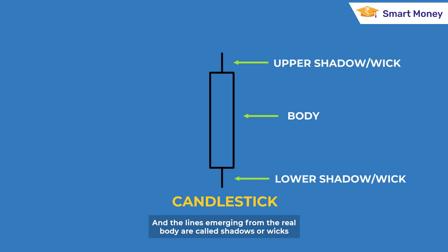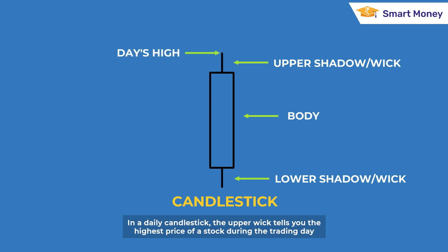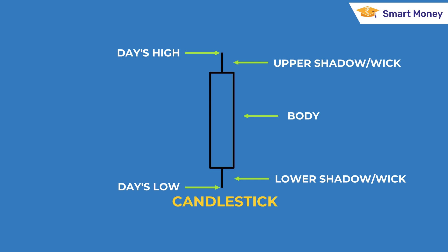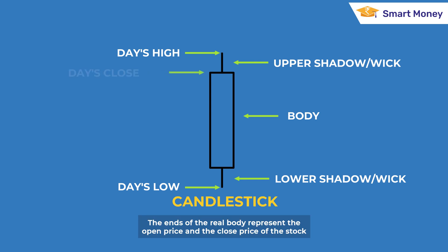In a daily candlestick, the upper wick tells you the highest price of a stock during the trading day, while the lower wick tells you the lowest price of the stock during the same day.